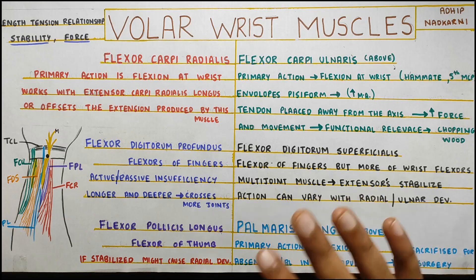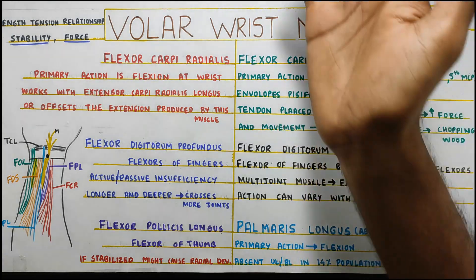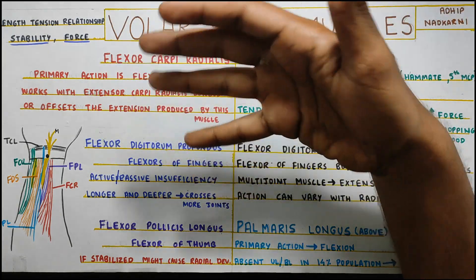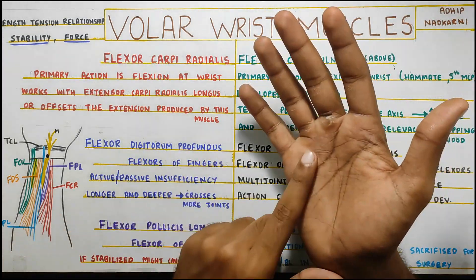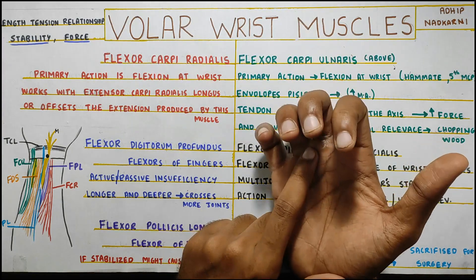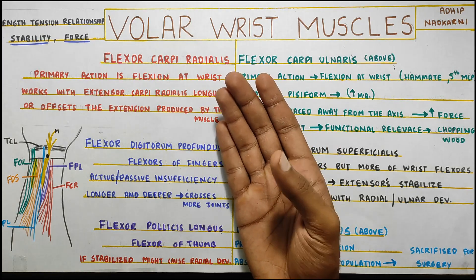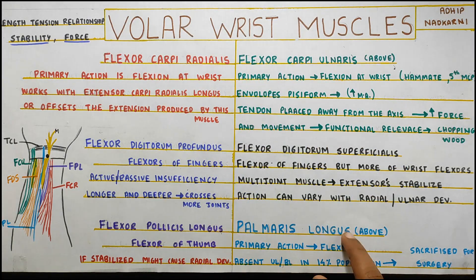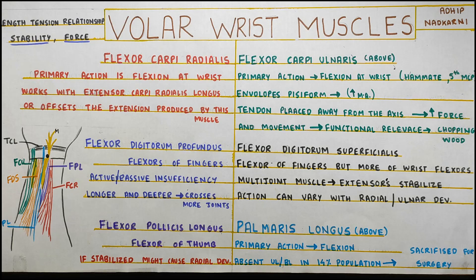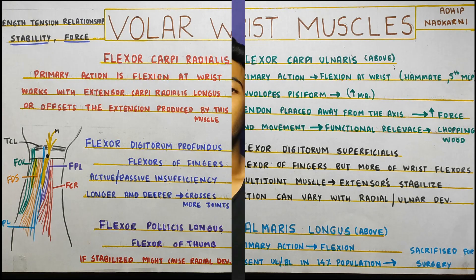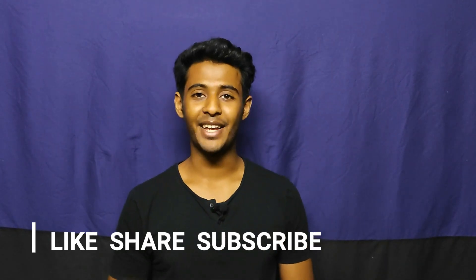Now that we have covered all the muscles, let's quickly summarize. Flexor carpi radialis causes flexion and radial deviation. Flexor carpi ulnaris causes flexion and ulnar deviation. Flexor digitorum superficialis is more of a wrist flexor, and flexor digitorum profundus is more of a finger flexor. Flexor pollicis longus flexes the thumb and can cause radial deviation, and palmaris longus is a wrist flexor that can be sacrificed in some surgeries. That's all for today — please like, share, and subscribe. Thank you for watching.